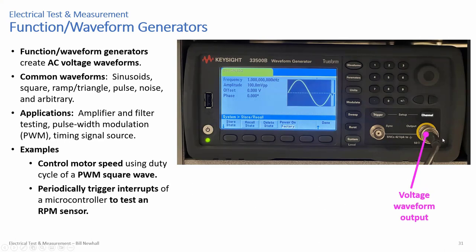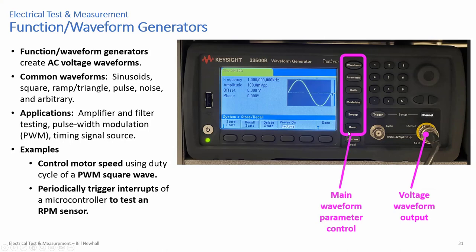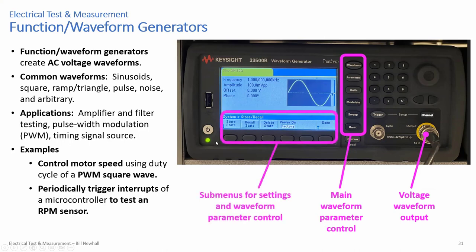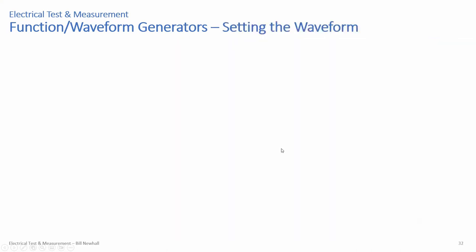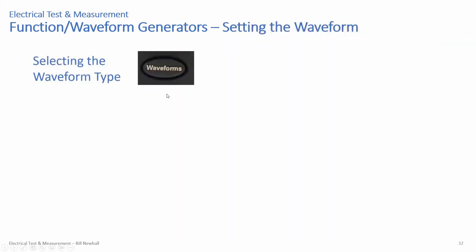The voltage waveform output is a BNC connector. Here's where you select the main parameters: waveforms, parameters, units, other options, with submenus for setting waveform parameter controls. Someone asked what the sync pin is for — you can use it to trigger the waveform from an external source, to synchronize this instrument with other circuits, or to trigger an arbitrary waveform or pulse at a specific time.